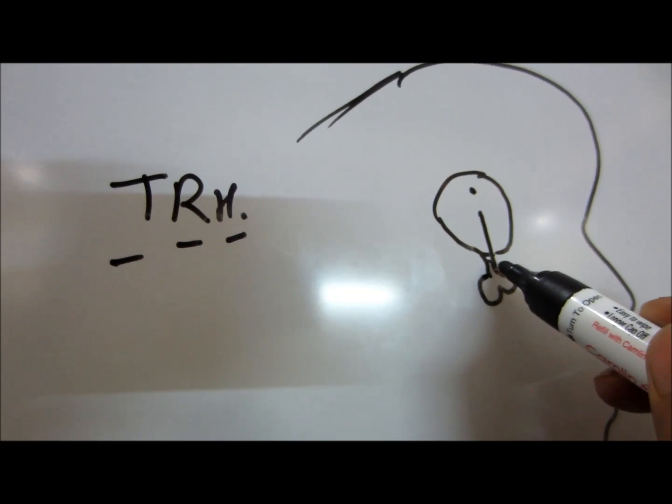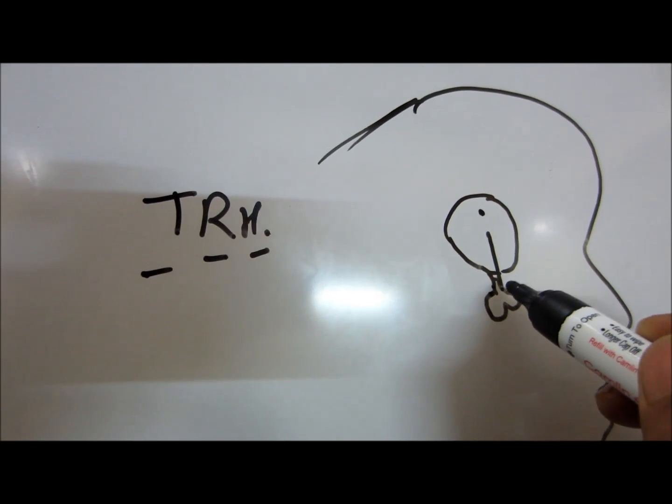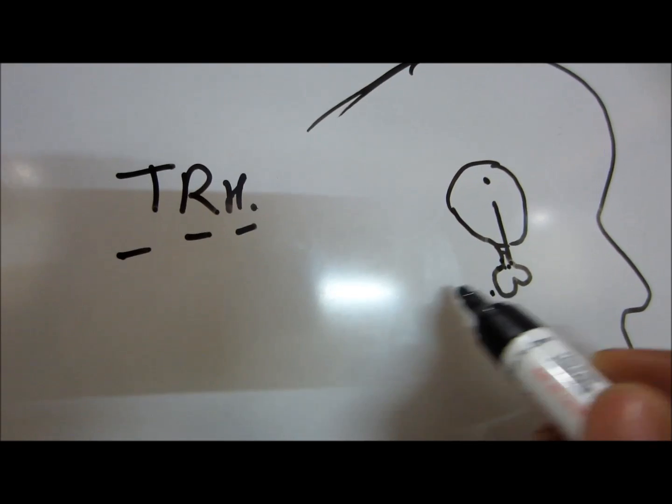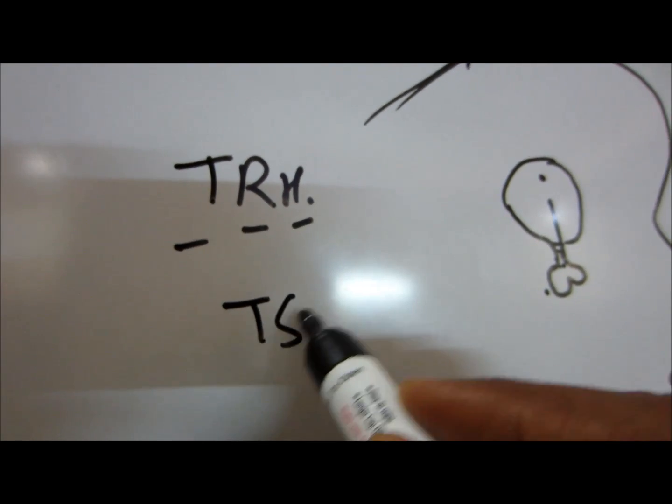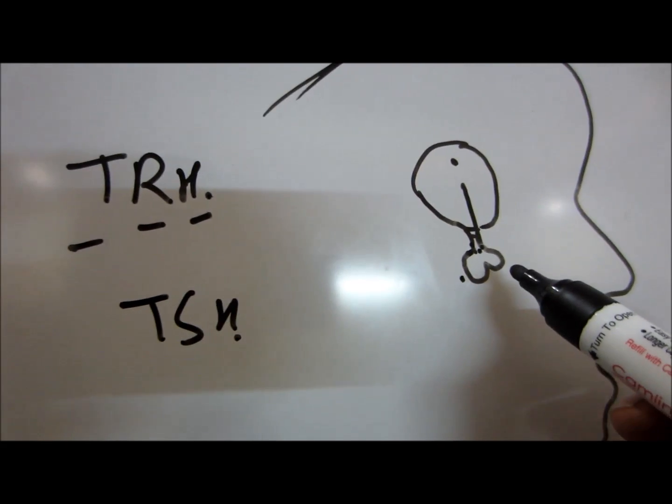This hormone goes to the pituitary. It stimulates the pituitary to release TSH. Now TSH is released from the anterior part of the pituitary.